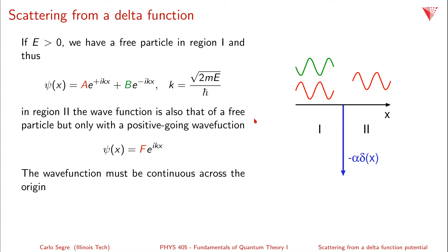The wave function must be continuous across the origin. At x = 0, we have A·e^(ik·0) + B·e^(-ik·0) = F·e^(ik·0), which simplifies to A + B = F.